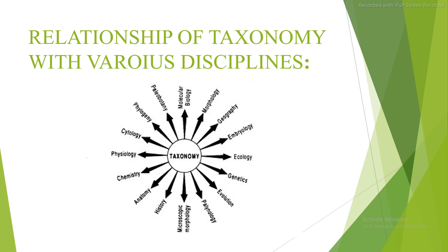The relationship of taxonomy with various disciplines is shown in the figure. Taxonomy is related to all disciplines of science, including paleobotany, molecular biology, morphology, geography, embryology, genetics, evolution, palynology, microscopic morphology, anatomy, chemistry, physiology, cytology, and phylogeny.